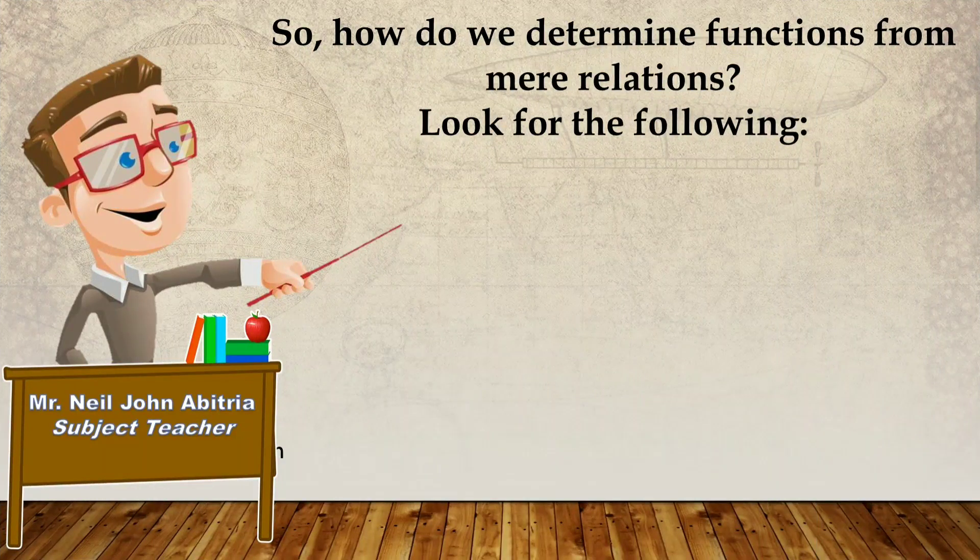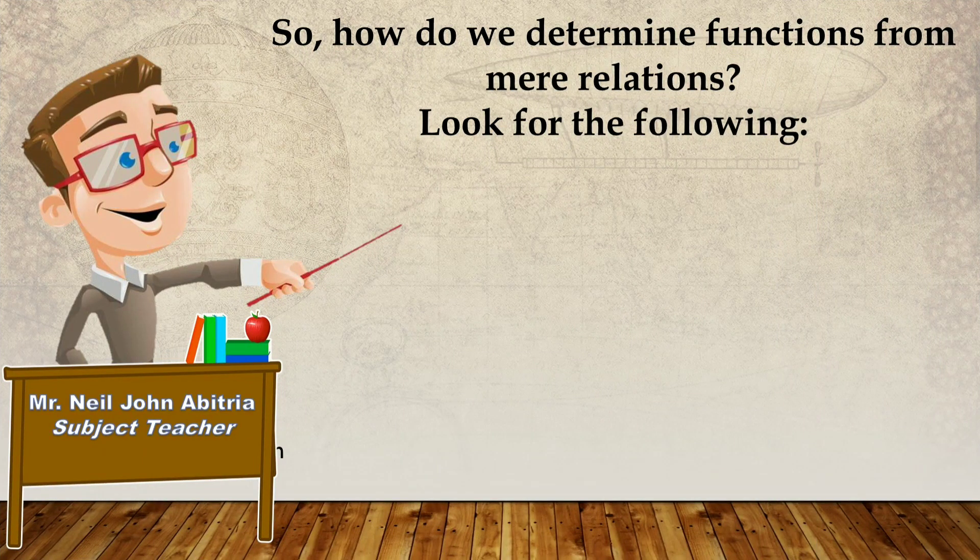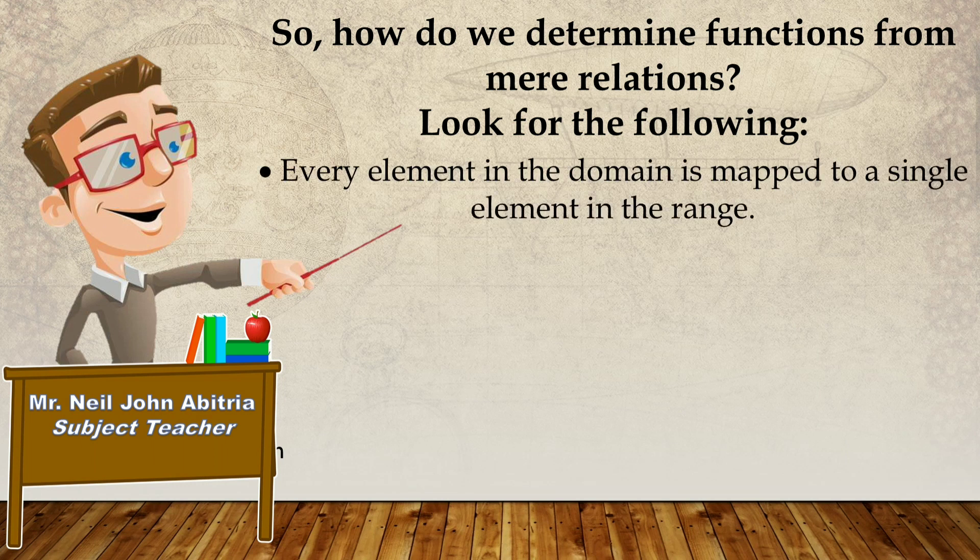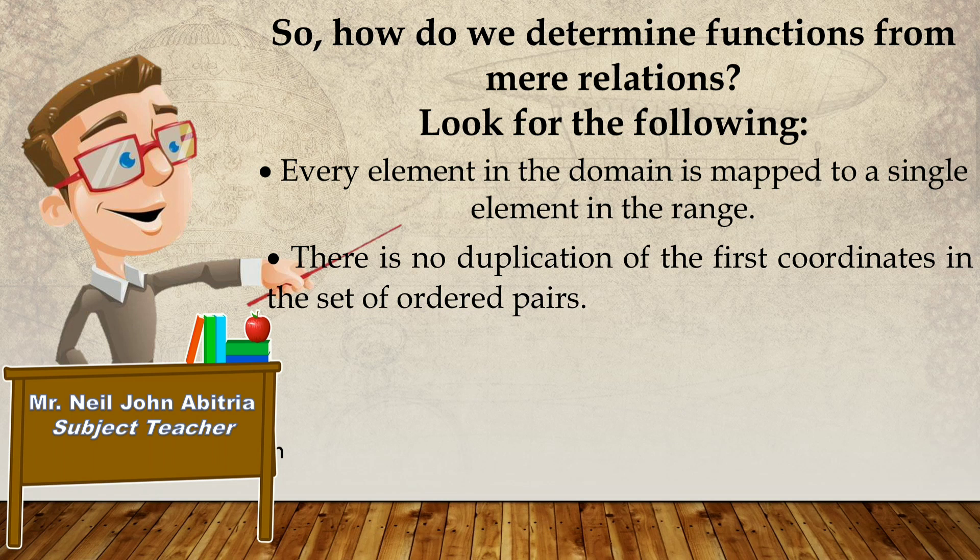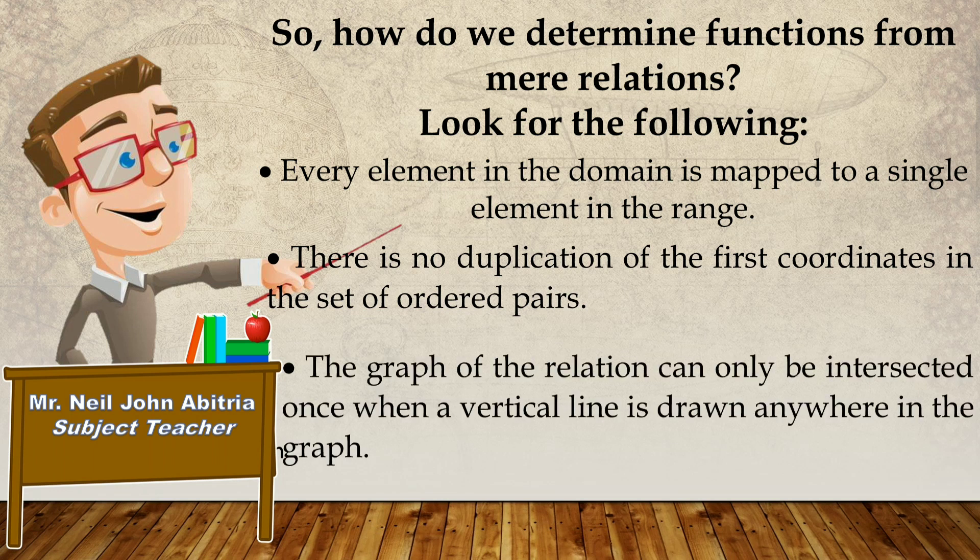So, how do we determine if it's a function or mere relation? Look for the following: First, every element in the domain is mapped to a single element in the range. And secondly, there is no duplication of the first coordinates in the set of ordered pairs. And third, the graph of the relation can only be intersected once when a vertical line is drawn anywhere in the graph. It's important to know these things so we can easily identify or determine if it's a function or mere relation.